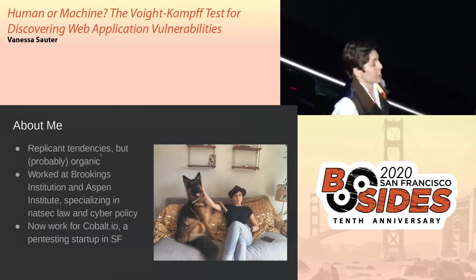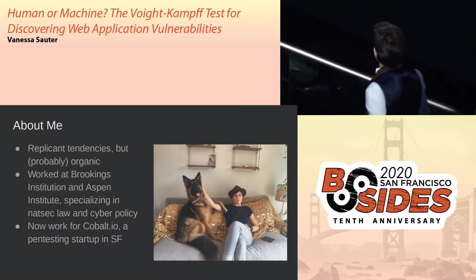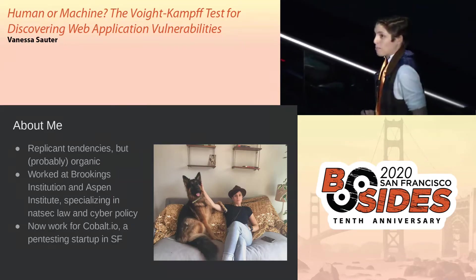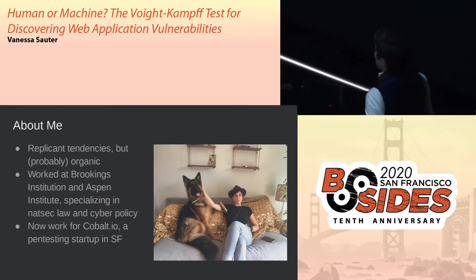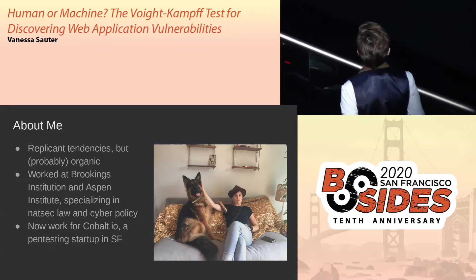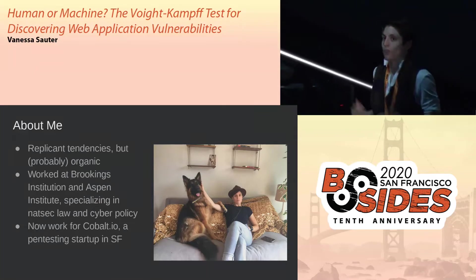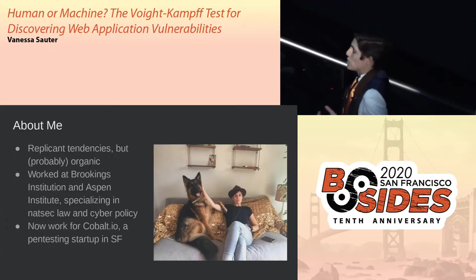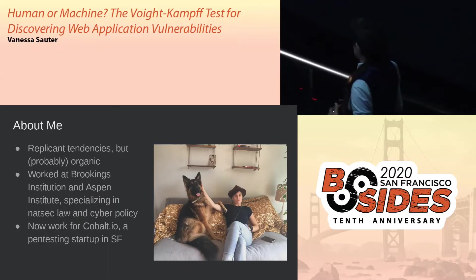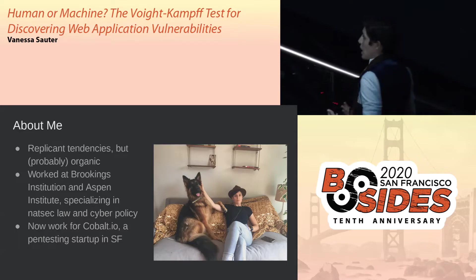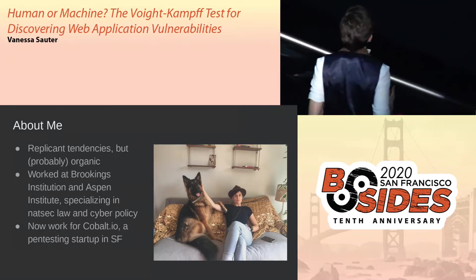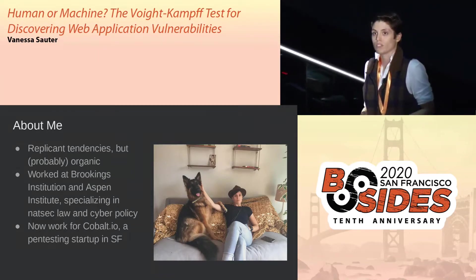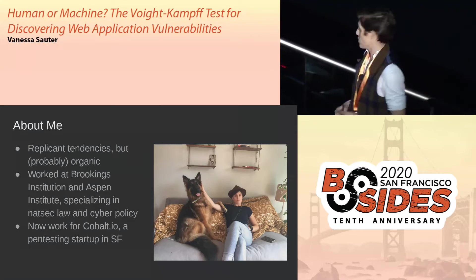My name is Vanessa. I don't actually know if I'm replicant or organic — the Tyrell Corporation has not tested me yet, but I'm going to take a safe bet that I'm probably organic. I used to work at Brookings and the Aspen Institute. My focus was cybersecurity policy within the parameters of national security.